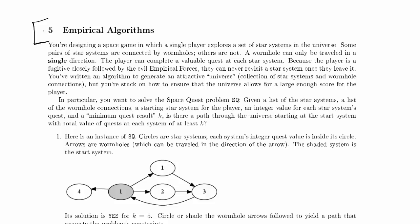The player can complete a valuable quest at each star system. Sounds like a directed graph with weights on the nodes. Because the player is a fugitive, closely followed by the evil empirical forces, they can never revisit a star system once they leave it. You've written an algorithm to generate an attractive universe, which is a collection of star systems and wormhole connections, but you're stuck on how to ensure that the universe allows for a large enough score for the player.